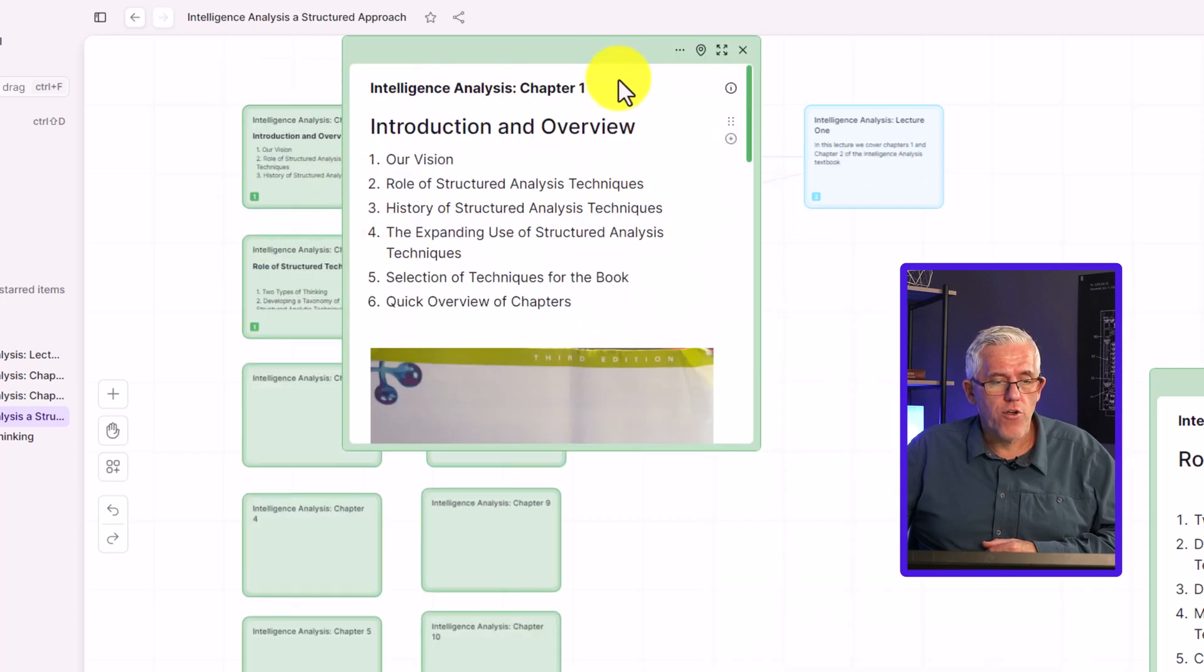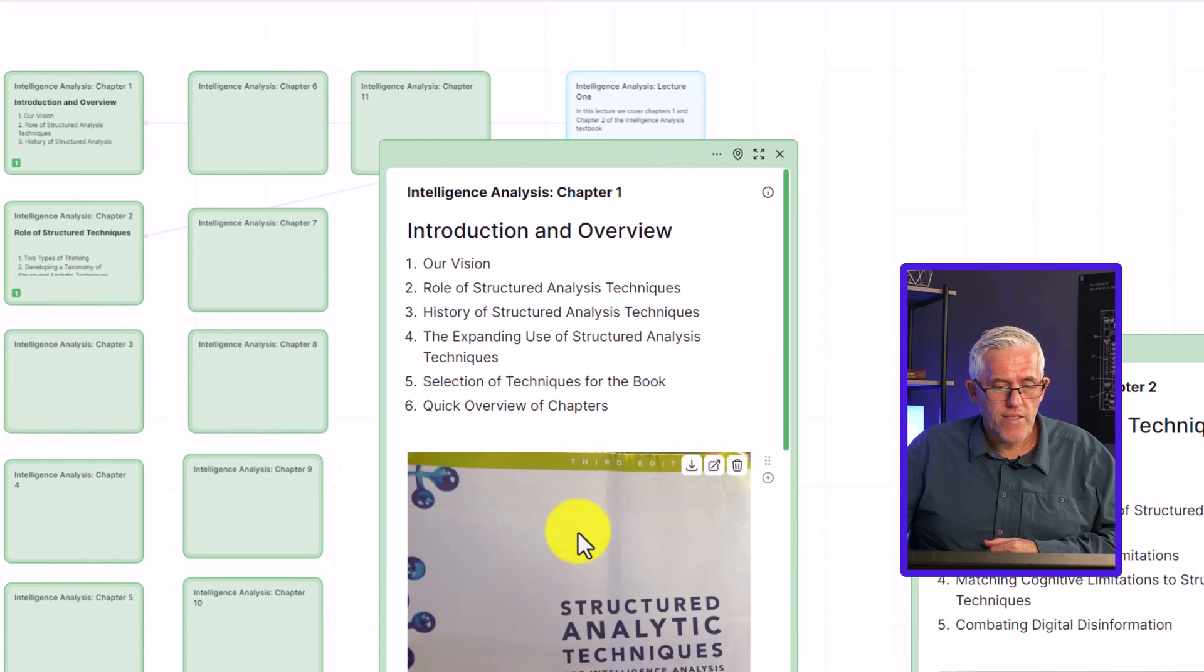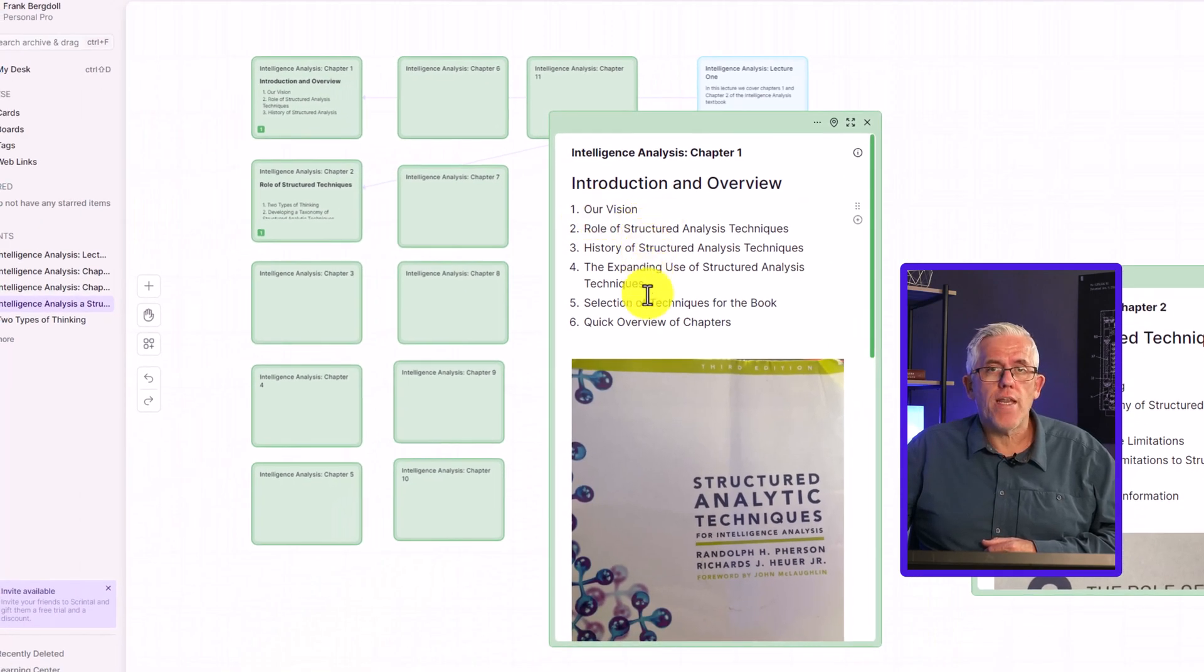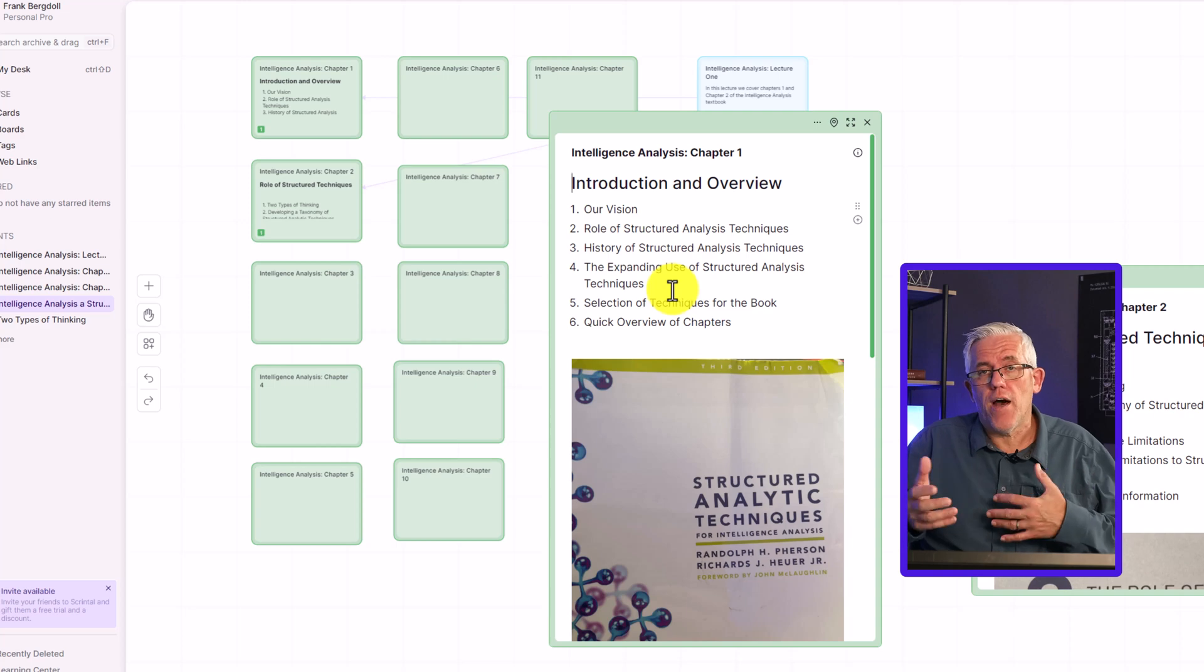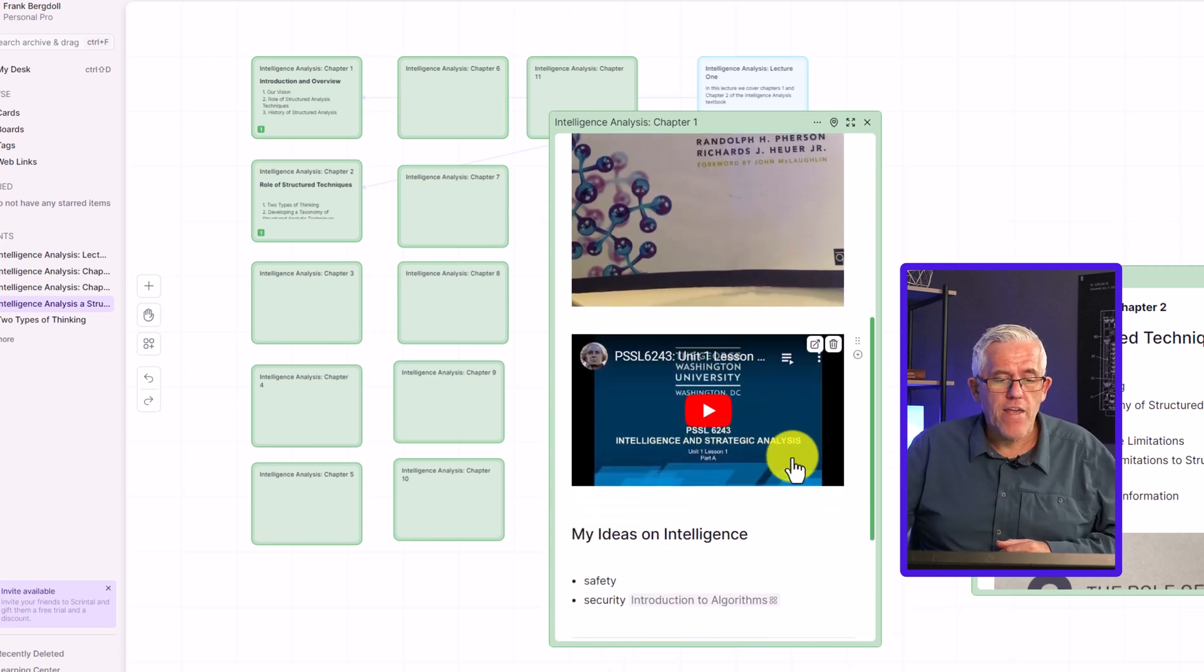If I go into my note here, you can see that I've done a few things. First of all, if I drag this down just a little bit, I've gone in and typed in all of the table of contents main headings, that's going to allow me to start connecting information from one book to another very easily. I've also taken a picture using my phone Scrintle on the phone. So I have a copy of the cover of the book. And I've even linked out to a YouTube video playlist on intelligence analysis.